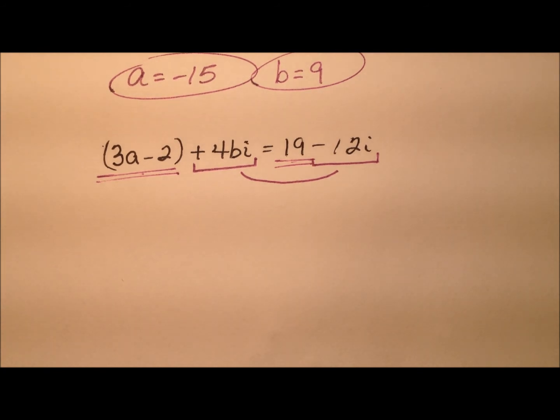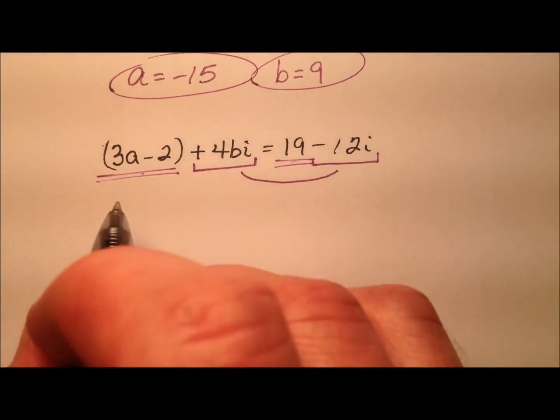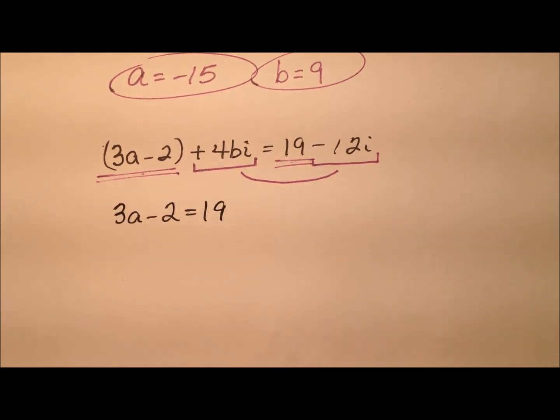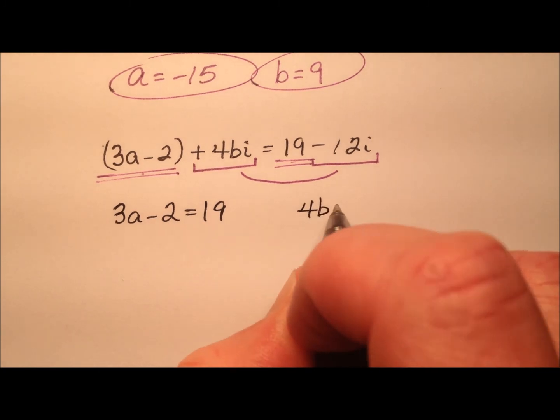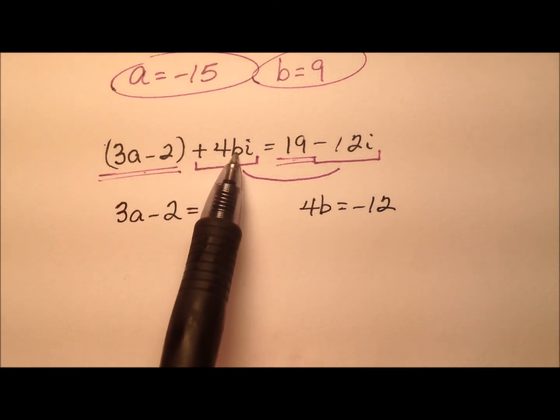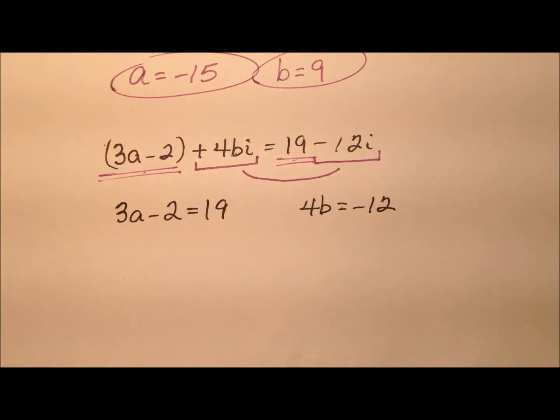So I can go ahead and write a couple of nice equations. So 3a minus 2 equals 19. Also 4b equals negative 12. And in solving these two equations, I can figure out values for a and b that will make this initial equation true.